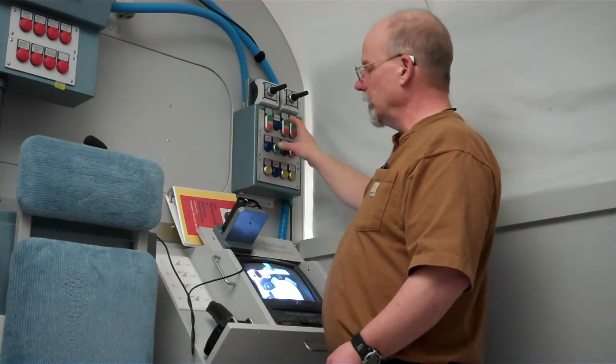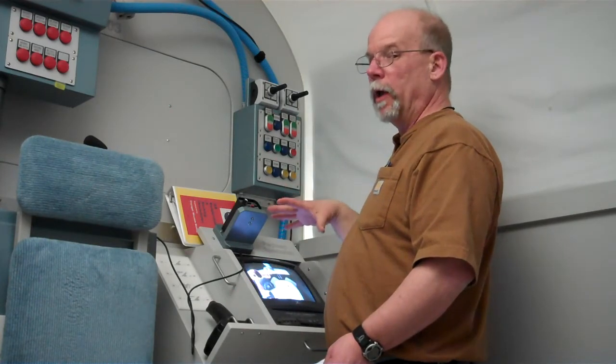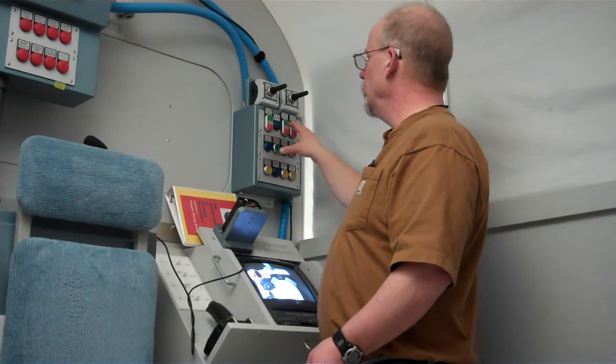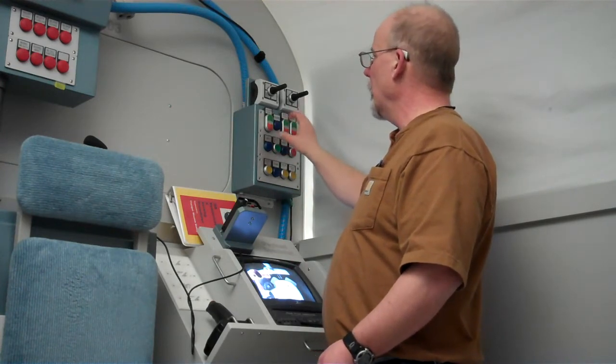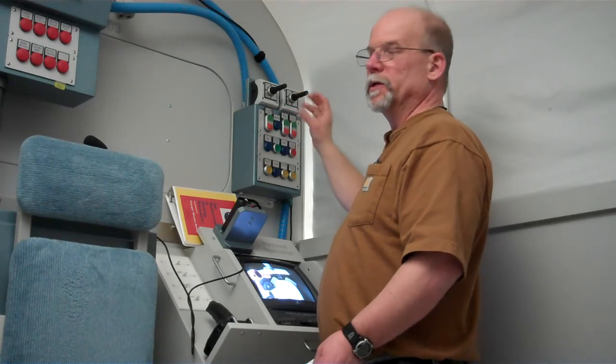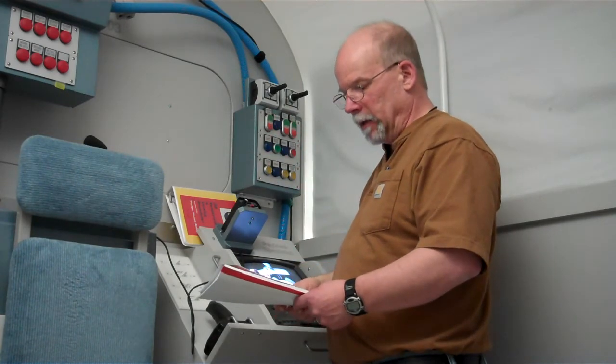Once you've docked, you'll use the joysticks to go through the steps of deploying the next part of the International Space Station. Then you'll have to undock and fly away so the pilot can take over and bring the shuttle back in.